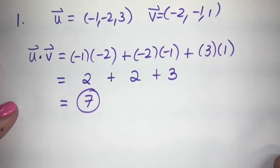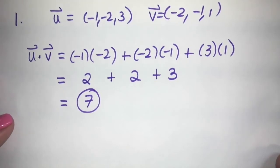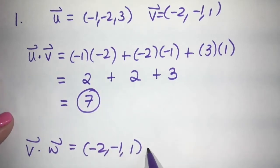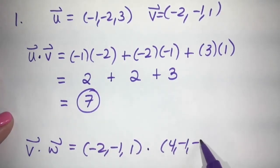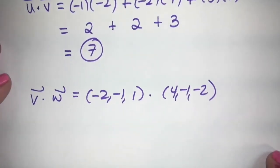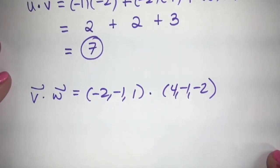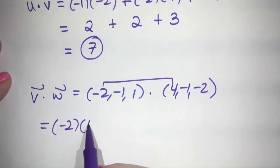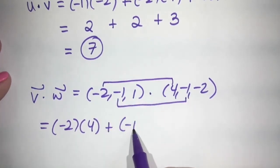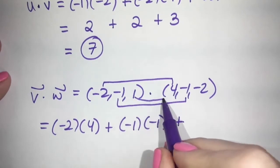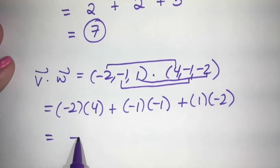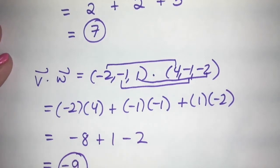Dot product can be negative or positive — it just depends on the vectors. If we do v dot w, where v = (-2, -1, 1) and w = (4, -1, -2): negative 2 times 4 plus negative 1 times negative 1 plus 1 times negative 2 gives us negative 8 plus 1 minus 2, so negative 9 is your final answer.